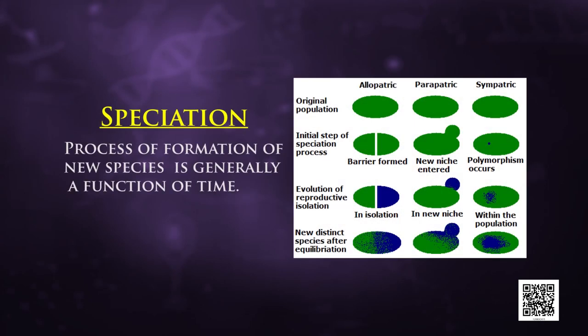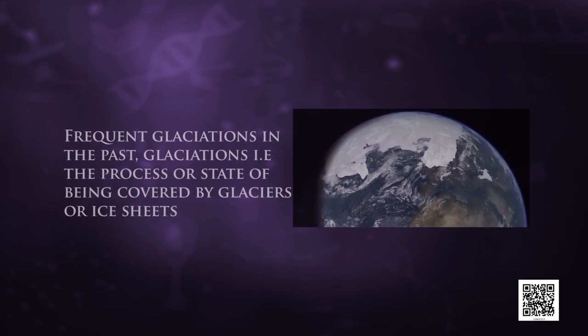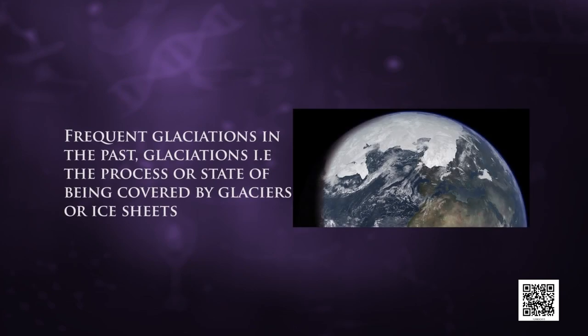What is so special about the tropics that might account for their greater biological diversity? Ecologists and evolutionary biologists have proposed various hypotheses. One important hypothesis is that speciation — the process of formation of new species — is generally a function of time. Unlike temperate regions subjected to frequent glaciation in the past, tropical latitudes have remained relatively undisturbed for millions of years.